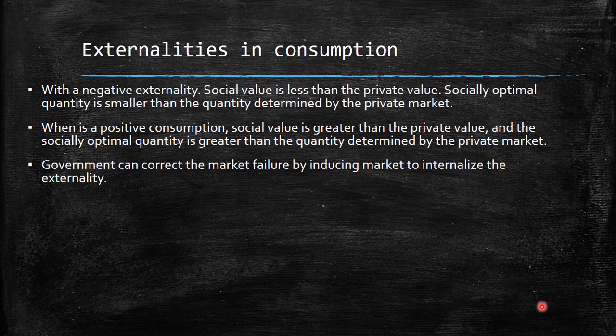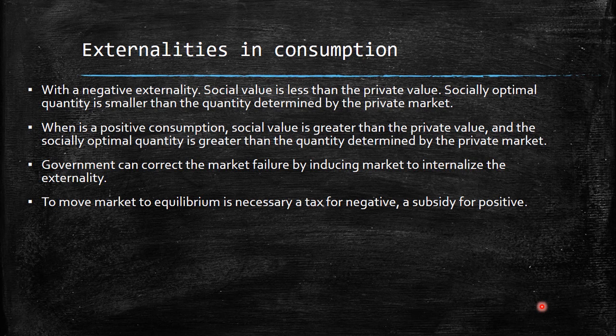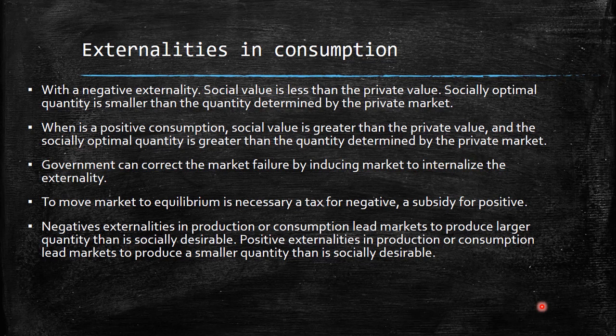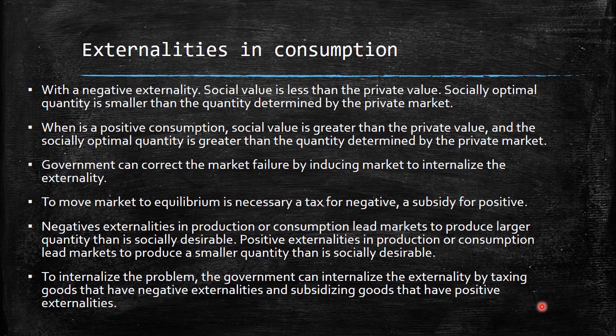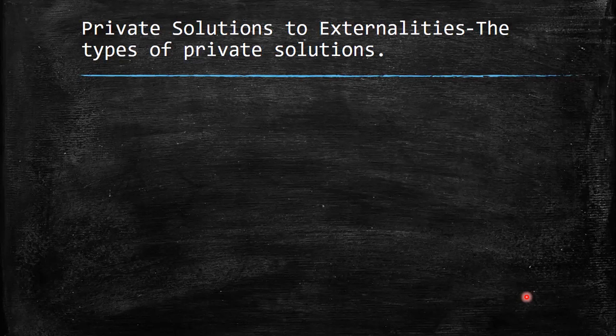Government can correct market failure by inducing markets to internalize the externality. To move the market toward the optimum, a tax is needed for negative externalities and a subsidy for positive ones. Negative externalities lead markets to produce a larger quantity than is socially desirable — more pollution, more alcohol. Positive externalities lead markets to produce less than socially desirable — such as education or restoration of buildings.